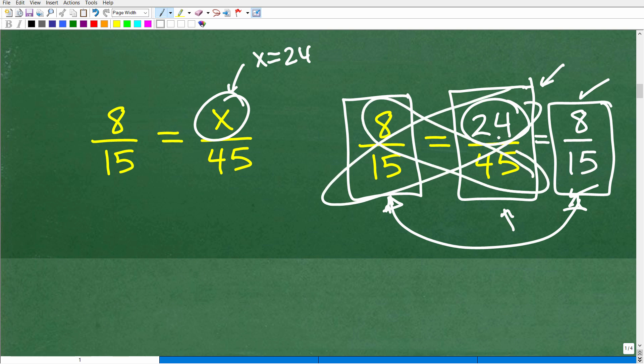So if you take 15 times 24, that's going to be equal to 8 times 45, or you could just reduce that fraction if you just wanted to verify that in fact, you've got this right.